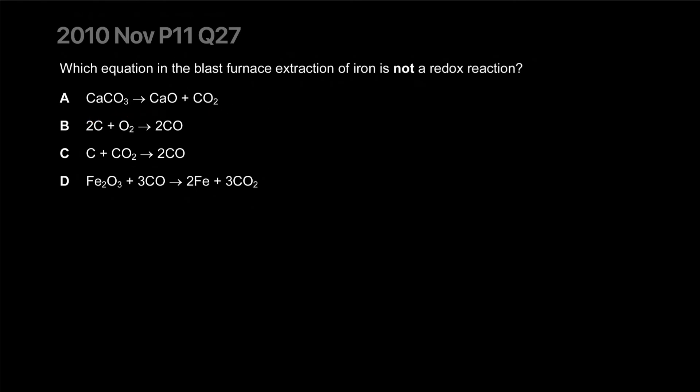Which equation in the blast furnace extraction of iron is not a redox reaction? There we go, it's A. I don't see any changes in charges, so this is not a redox reaction. This is definitely a redox reaction because elements are turning into a compound. The elements will have a zero oxidation state, compounds will not - that's a basic rule of redox. If you see elements anywhere, both B and C are out. This is the equation for reduction of iron - iron has an oxidation state of 3+ turning into 0. Correct answer is A.